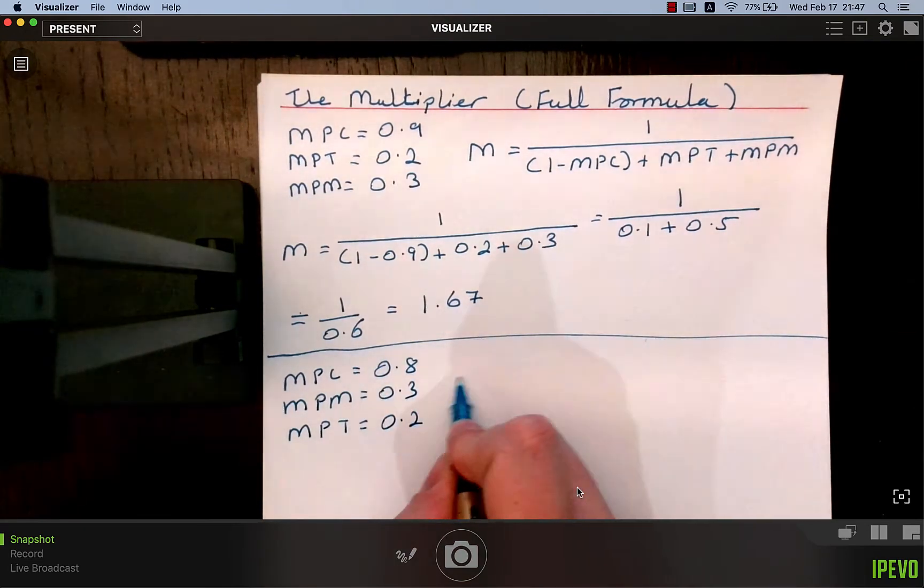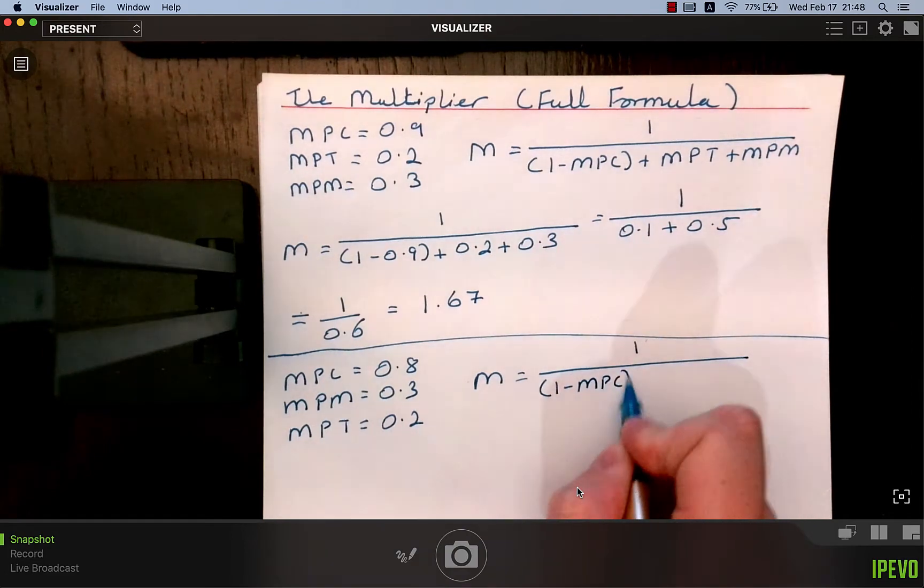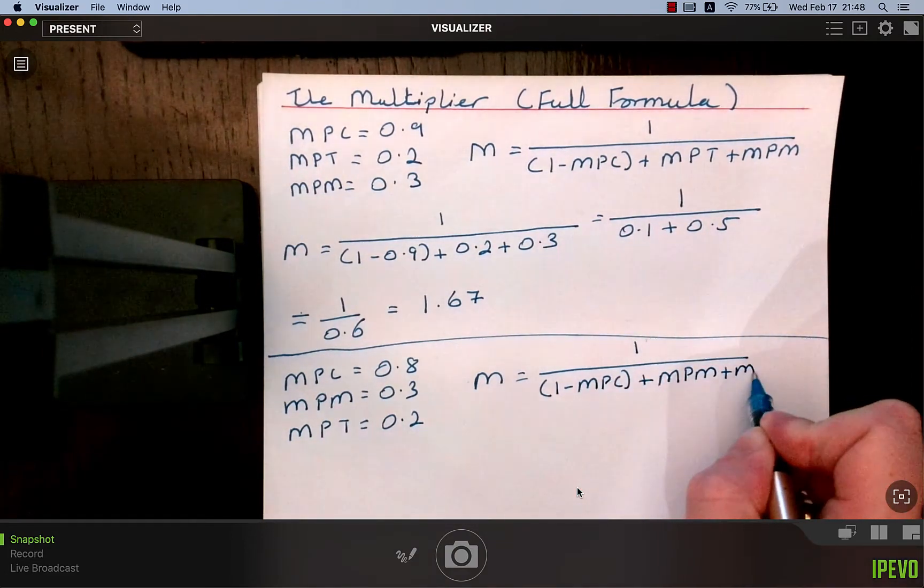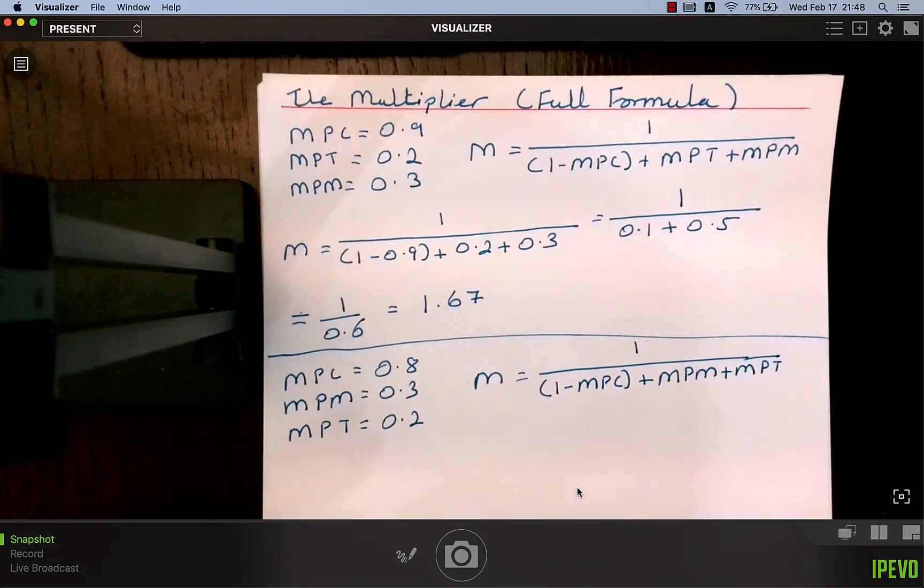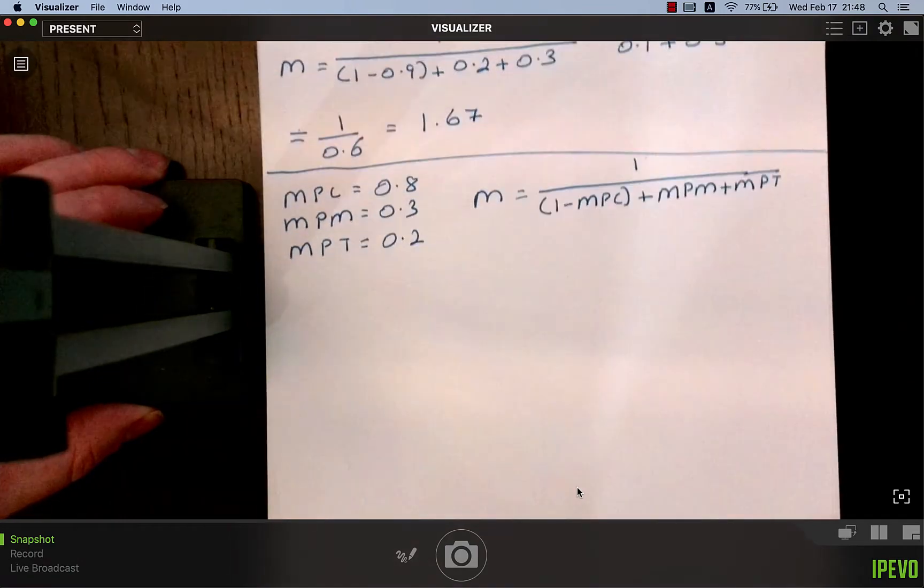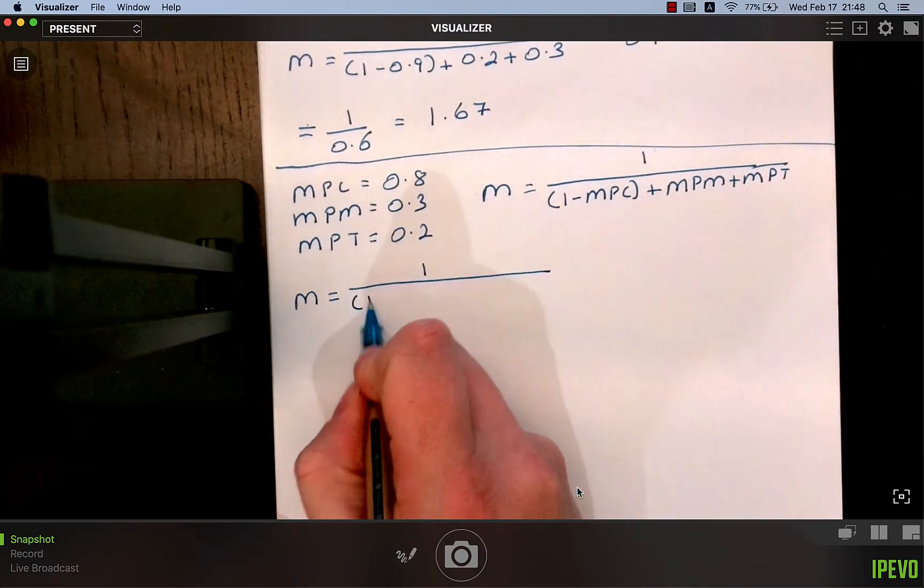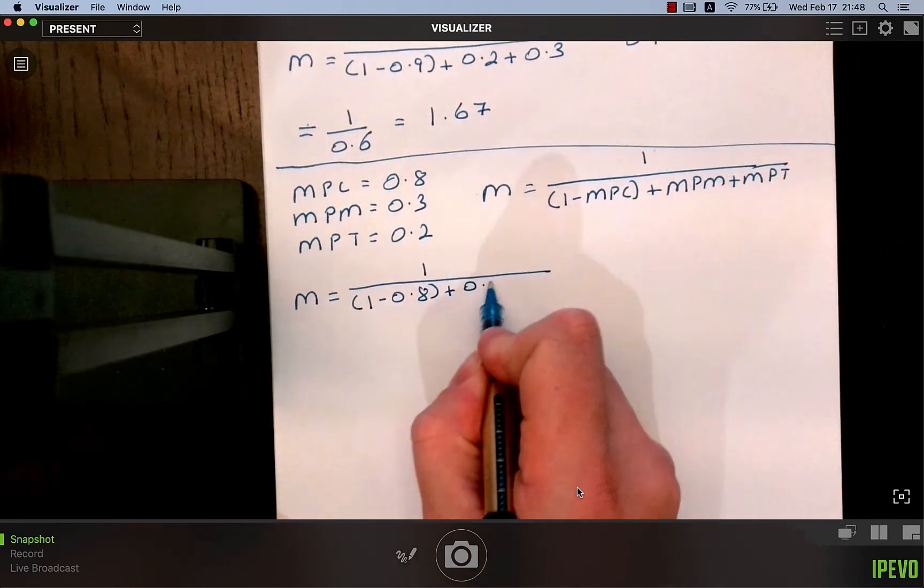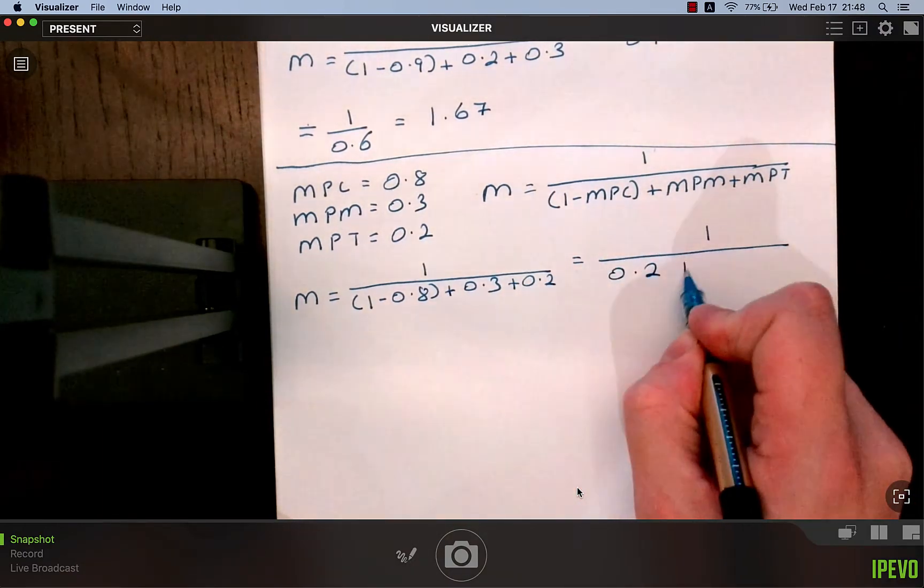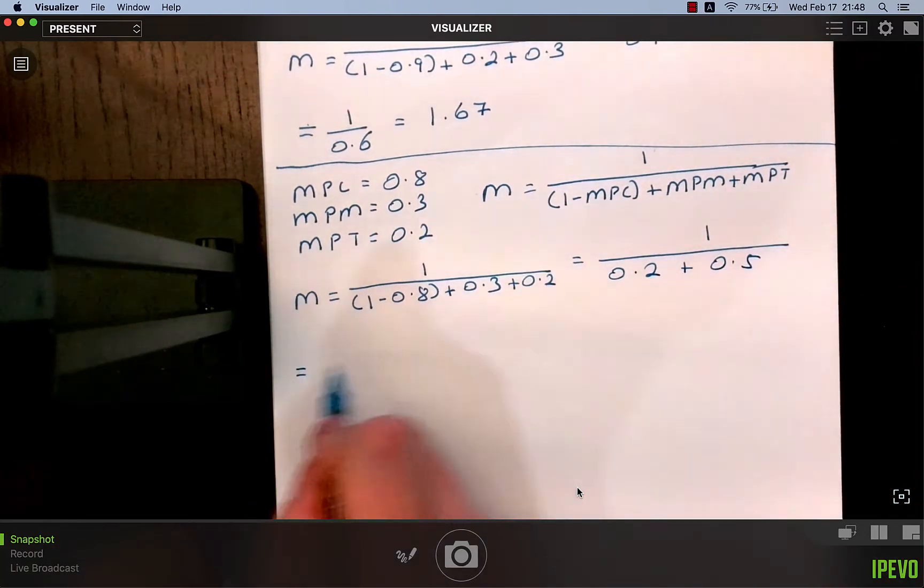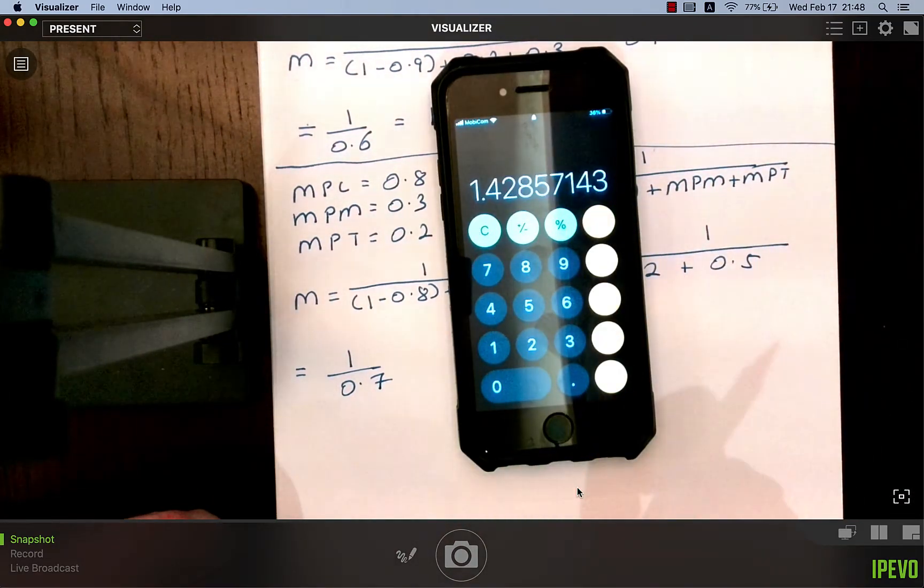The formula for the multiplier, and I intentionally am writing this out so it sticks in your mind, equals 1 over 1 minus MPC plus MPM plus MPT. The order doesn't matter at all. So it's 1 minus 0.8 plus 0.3 plus 0.2, which equals 1 over 0.7. 1 divided by 0.7 equals 1.43.